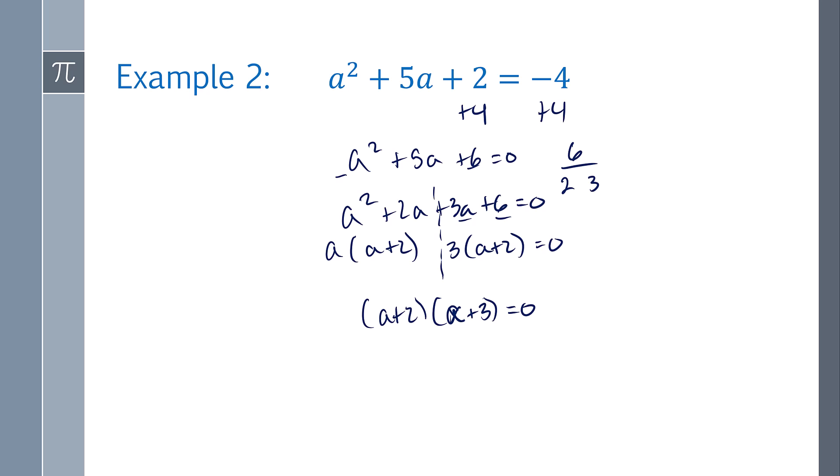Now remember, zero product principle, this is your a, this is your b, and so because a times b equals 0, I can assume that a equals 0 and b equals 0, so I can say a plus 2 equals 0 and a plus 3 equals 0.